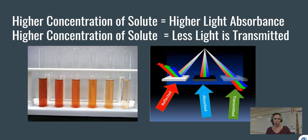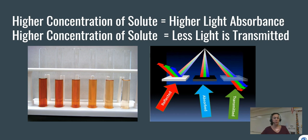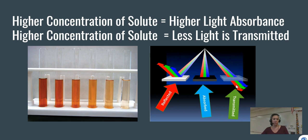There are three key terms: reflected, absorbed, and transmitted. Reflected light hits a surface and bounces off — this explains why we see colors. A plant leaf appears green because green light bounces off and reaches our eye. Blue light, however, is absorbed by the leaf, so it doesn't appear blue. Transmitted light goes through a sample, just like light through a window.